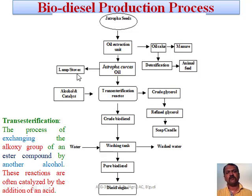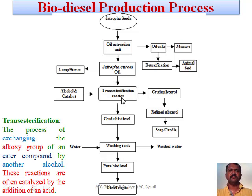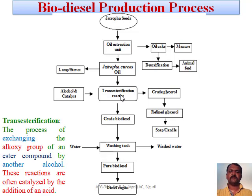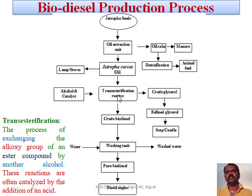This extracted oil can be directly used for lighting a lamp or lighting a stove. But if we have to make biodiesel from it, we have to undergo transesterification by adding some alcohol and catalyst into the transesterification reactor. Transesterification is the process of exchanging the alkoxy group in an ester compound by alcohol. Particularly these reactions are often catalyzed by the addition of an acid. After the transesterification process, when we are adding Jatropha oil into the transesterification reactor, crude glycerol will be collected from one end.